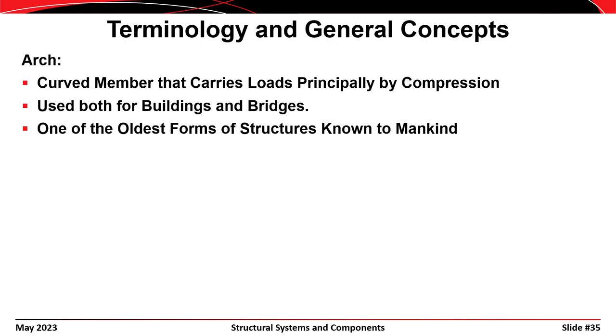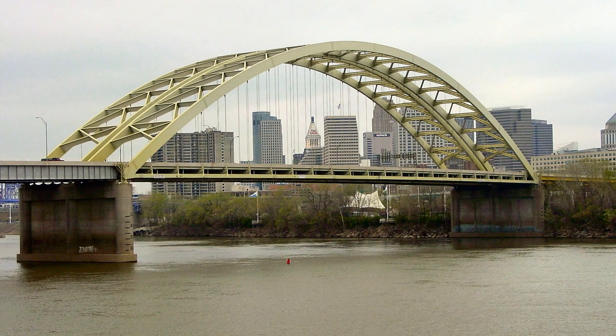An arch is a curved member that carries loads principally by compression, used both for bridges and buildings — probably more in bridges. It's one of the oldest forms of structures known to mankind. This is the Big Mac bridge over the Ohio River here in Cincinnati, which is a good example of an arch structure.